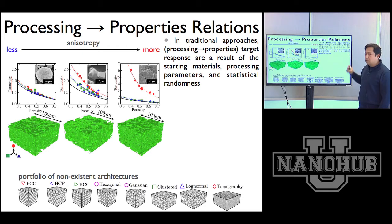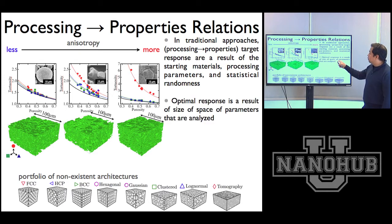One of the things that we'll emphasize in this class is relating processing or how you make it to the properties so that we can target the specific response as a result of the starting materials and the processing parameters. There's of course going to be some statistical randomness which we will have to account for, and we want to find that optimal response. There is no such thing as one size fits all in rechargeable battery technology.